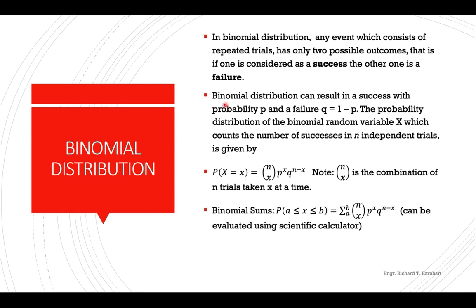Binomial distribution can result in a success with probability p and a failure q, which is the complement of p. The probability distribution of a random variable X, which counts the number of successes in n independent trials, is given by this formula.